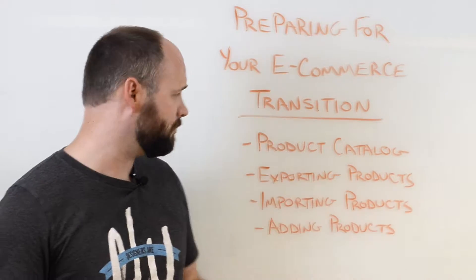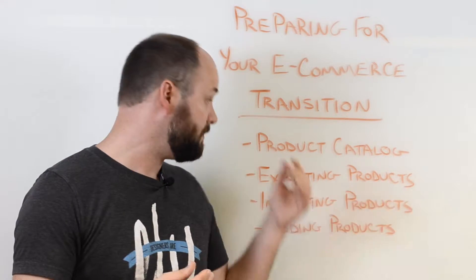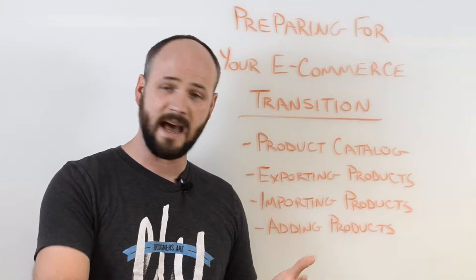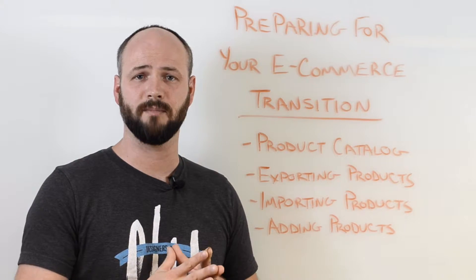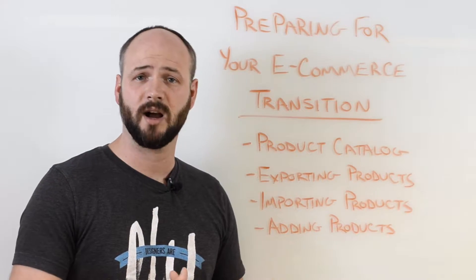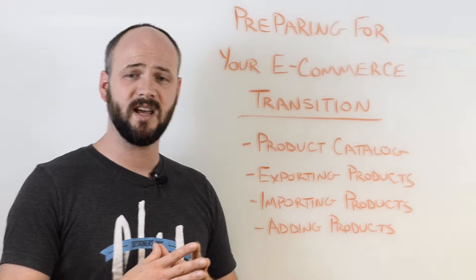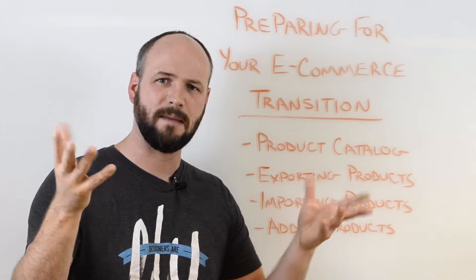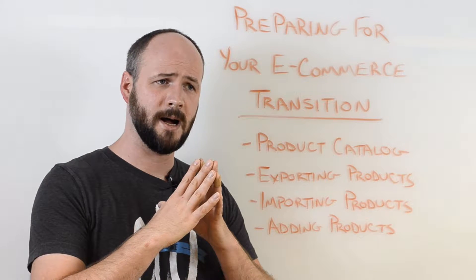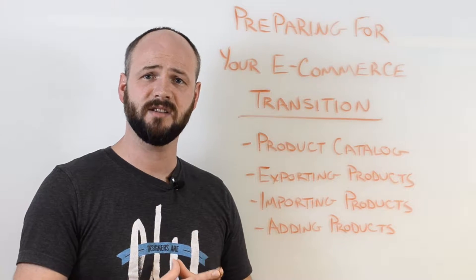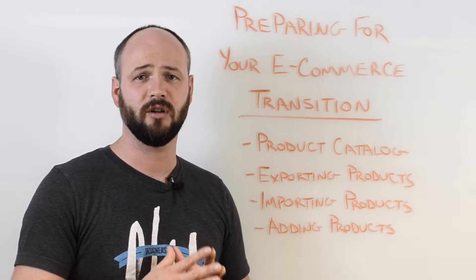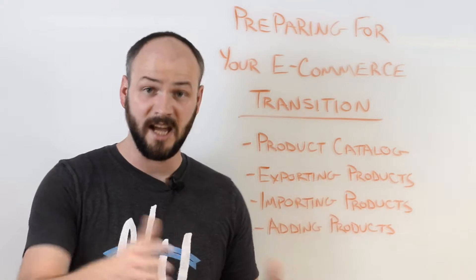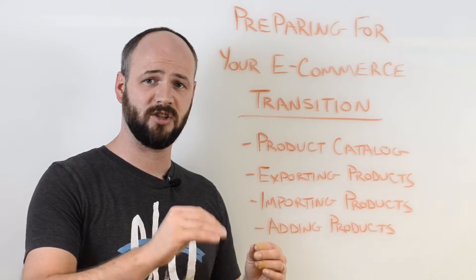So the first thing is: look at your product catalog. This may be one of the pain points — this may well be why you're switching, because you wanted to add products, add vendors, or restructure how your stuff is set up. Take a minute to sit down and diagram out, on paper, what the structure of your products is, what fields are associated with all of those products and product options. Make sure you understand everything that makes up that structure, and if it's going to change when you switch sites, make sure you understand what it's changing to.